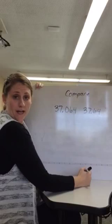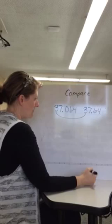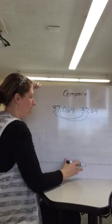When I compare decimals I am looking first at my whole numbers, and if my whole numbers are the same then I need to move over to the decimal. I've got tens, in my tens place I have 3s, in my ones place I have 7s. So my whole numbers are the same.